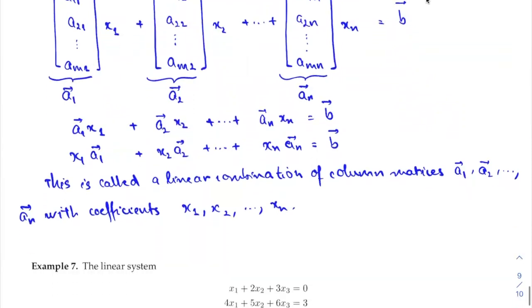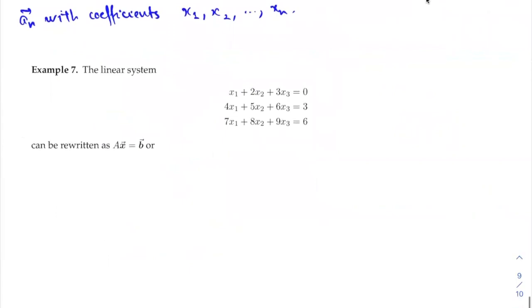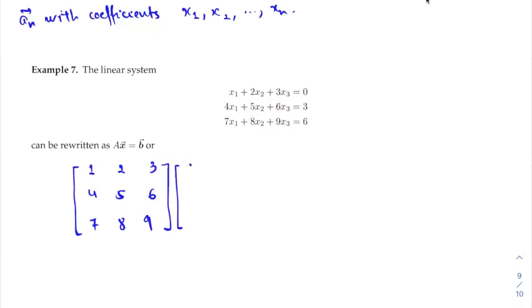In example 7, given the following system of linear equations, we can rewrite it in terms of the matrix equation AX equals B. The coefficient matrix A is [1, 2, 3; 4, 5, 6; 7, 8, 9], X equals [X1; X2; X3], and B equals [0; 3; 6]. You can turn the system into this matrix equation.